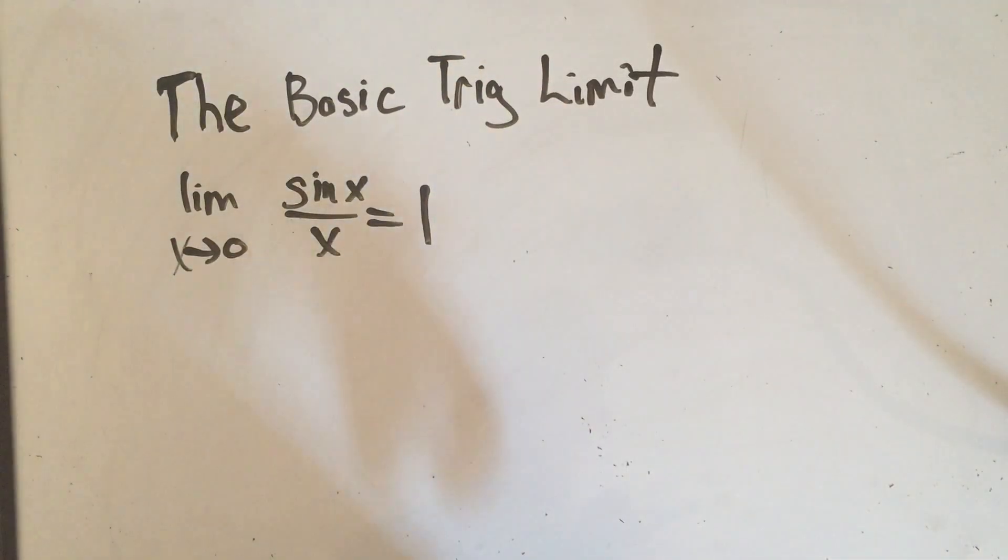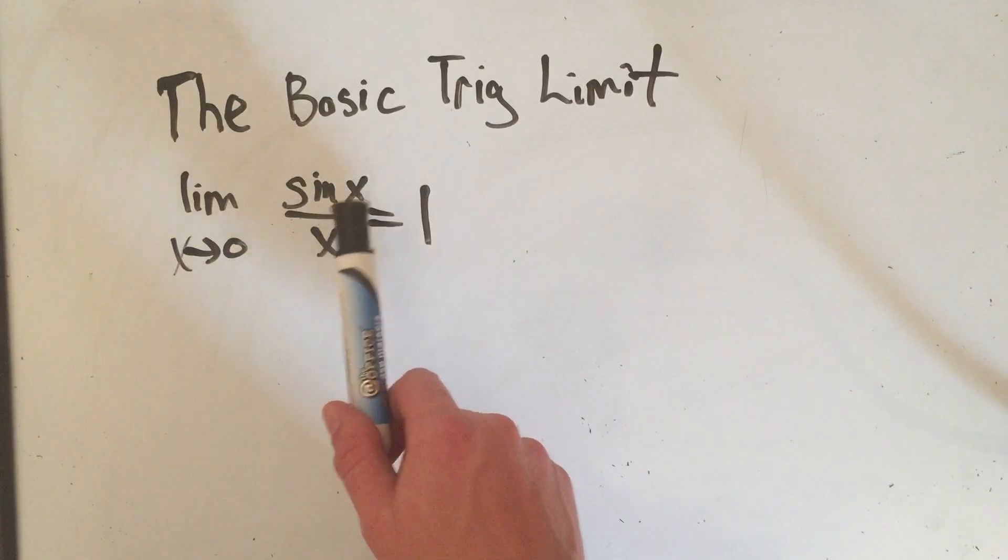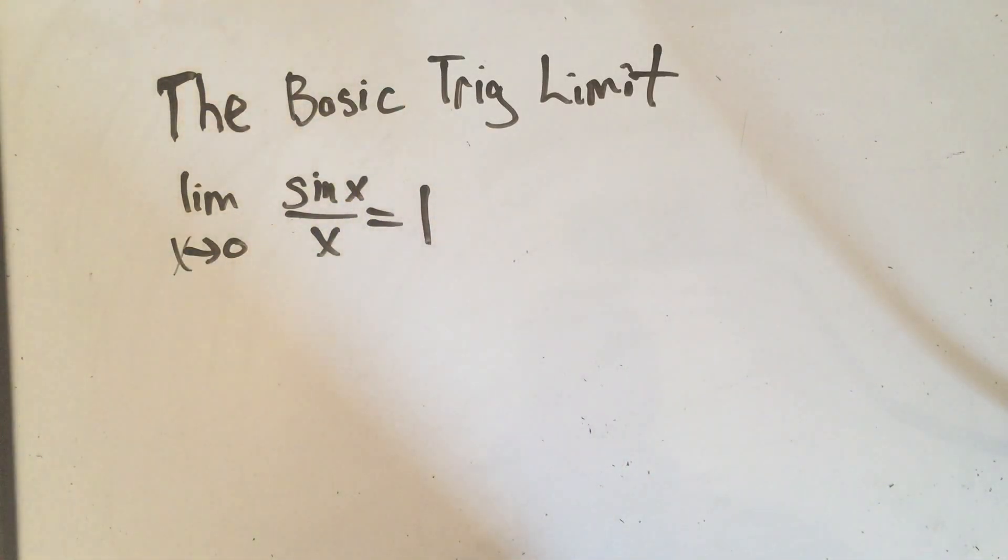Here is a very important identity when you're first learning limits about trig limits. It says that the limit as x approaches 0 of sine of x over x equals 1. There are going to be some problems at the beginning of calculus 1 where if you don't know this you cannot solve the problem.